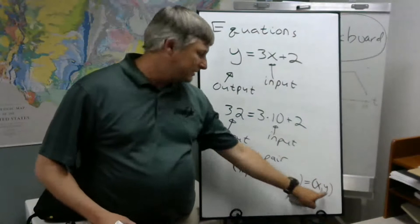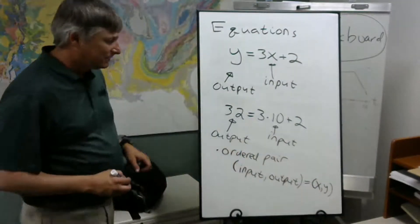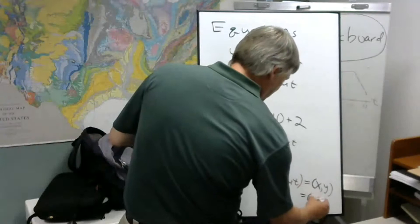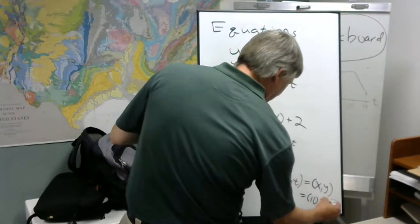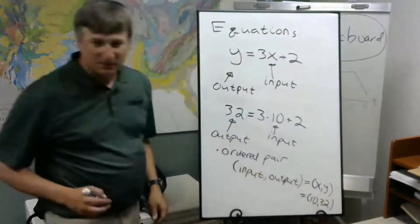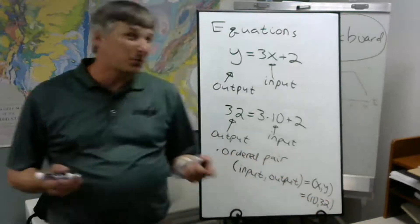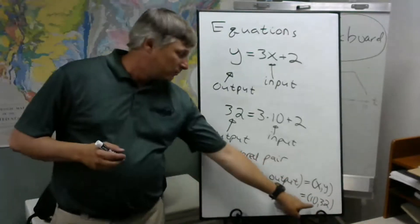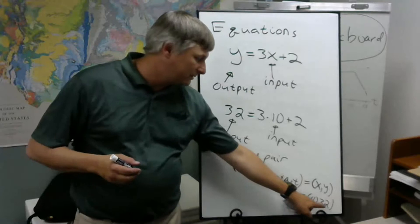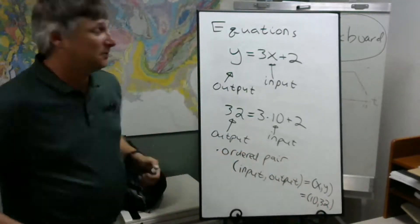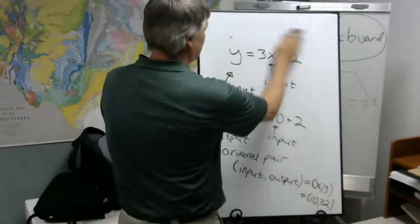So the input is X and the output is Y. For us in this case, since we chose 10 as an input, we got an output of 32. Our X comma Y is 10, 32. The order is always going to stay this way: what we started with, 10, what came out, 32. Now there's another term for this, another set of terms.